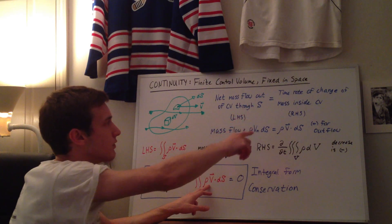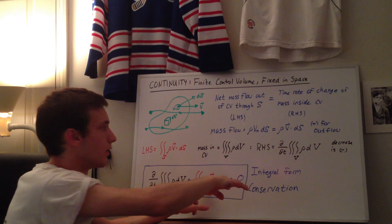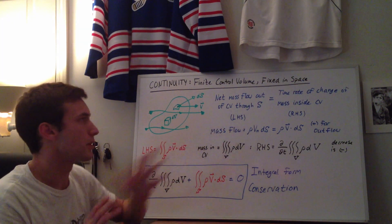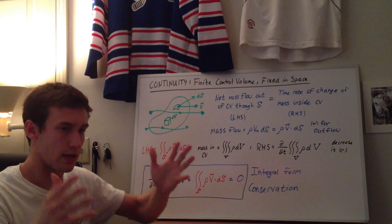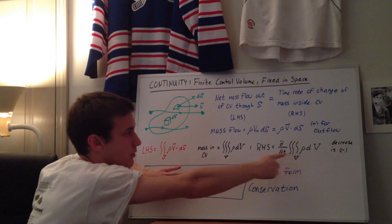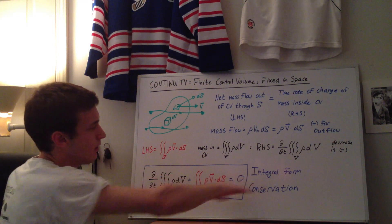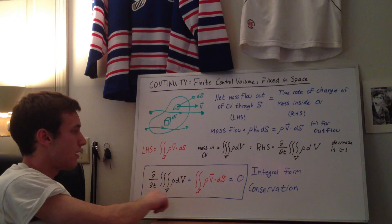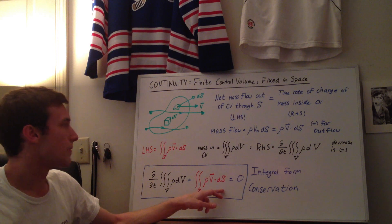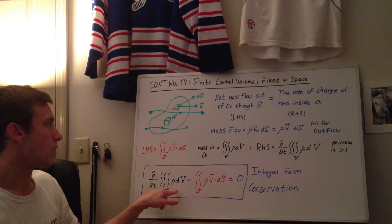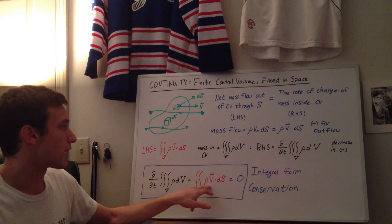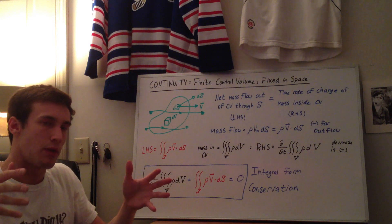We have the time rate of change of mass inside the control volume. Since it's a time rate of decrease — if something is flowing out, whatever's inside the control volume is decreasing — the right-hand side has a negative on this term. Bringing it over to the other side makes it positive. So we have the time rate of change of mass inside the control volume plus the net mass flow out, balancing each other. The increase inside the balloon is balanced by the outflow from the balloon.